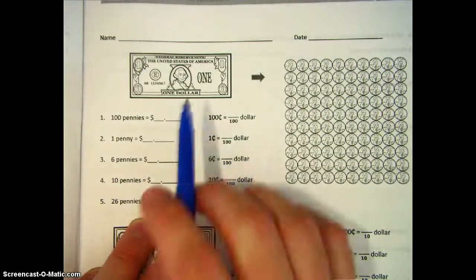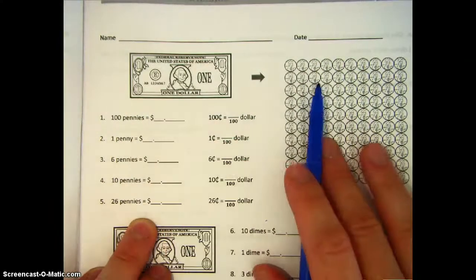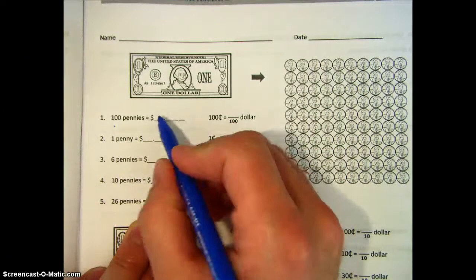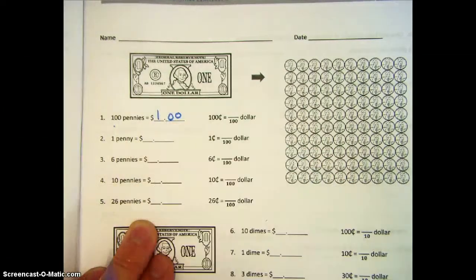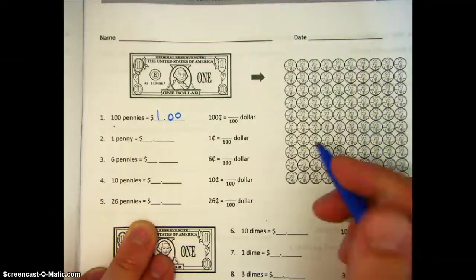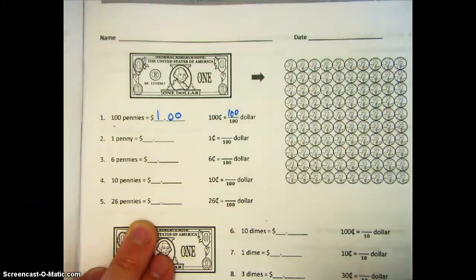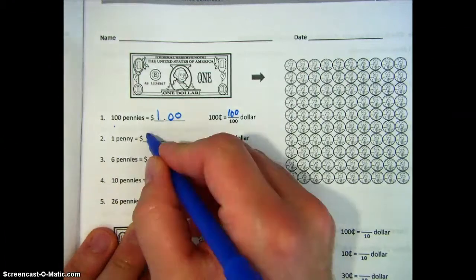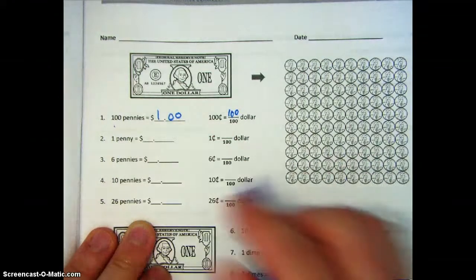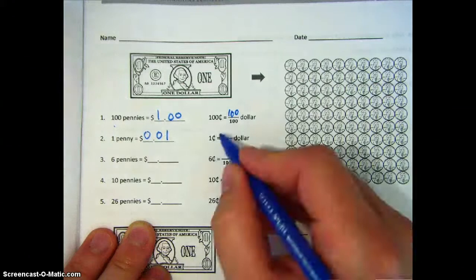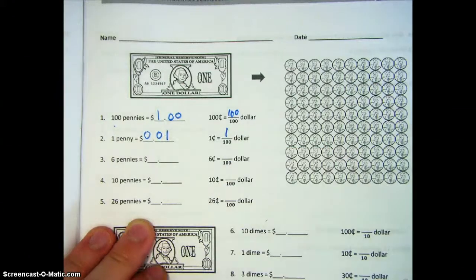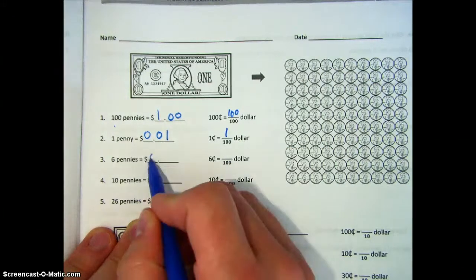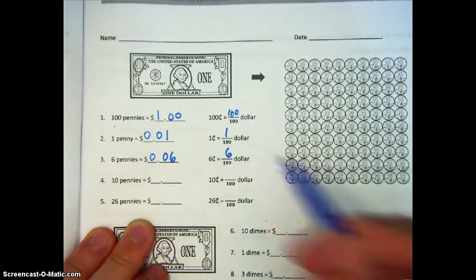First, $1 equals 100 pennies, so 100 pennies is equal to one whole dollar. 100 cents is 100 hundredths of a dollar. One penny, because we have 100 of them, means one penny is one hundredth of a dollar. Six pennies would then become six hundredths of a dollar.